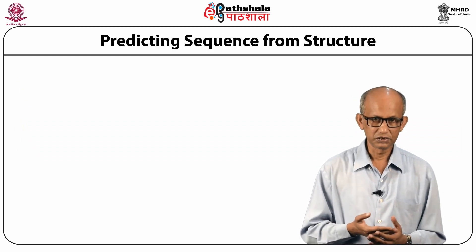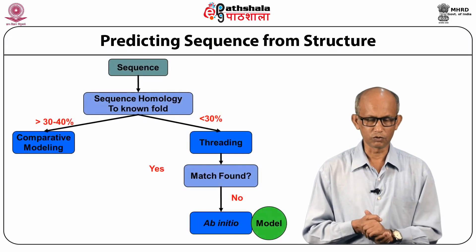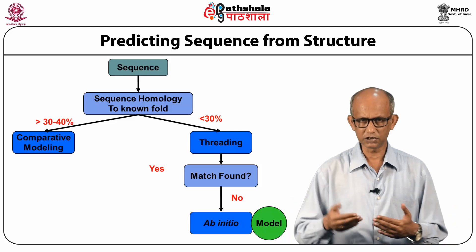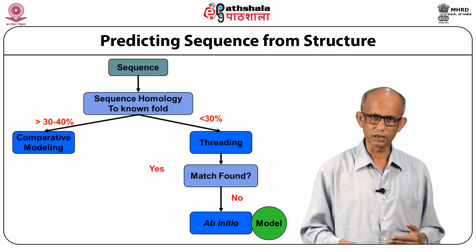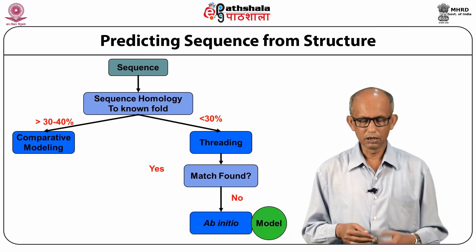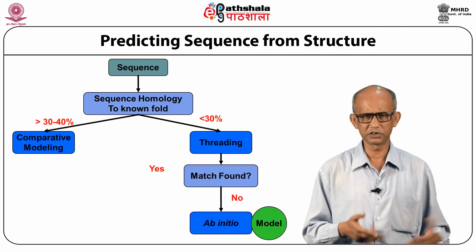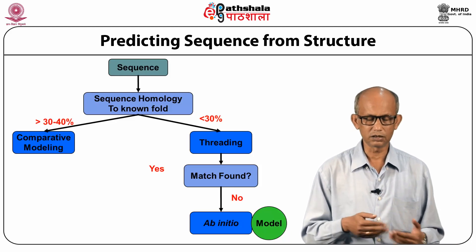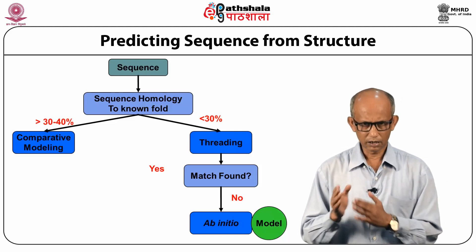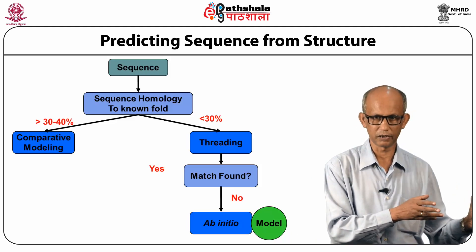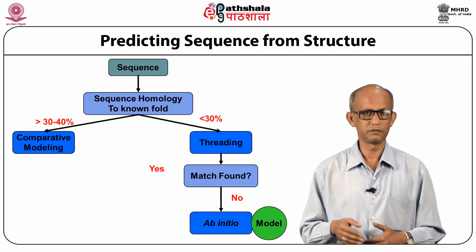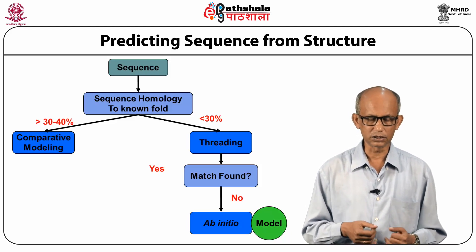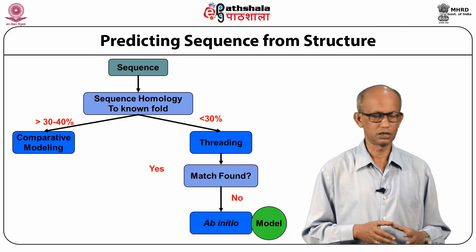So when do we do this? If I have the sequence of an unknown protein and I search for a template, and the sequence identity between my unknown protein (the target) and the template is about 30 to 40% or better, then I would use homology modeling. If the sequence identity is greater than 30 to 40%, homology modeling is the method of choice.